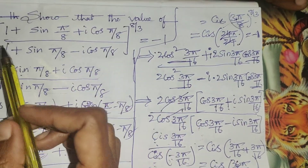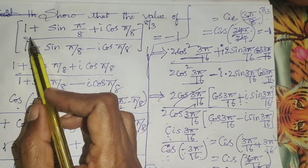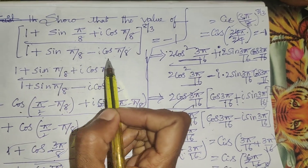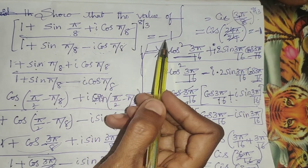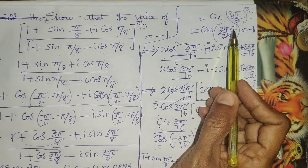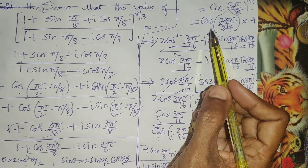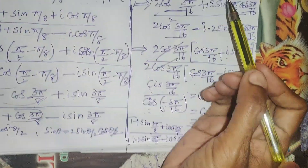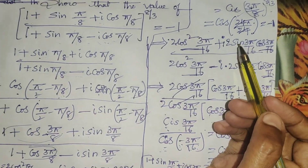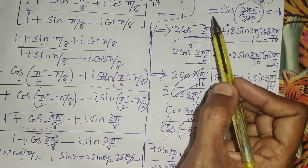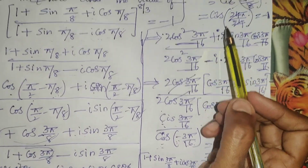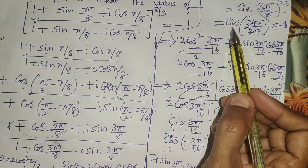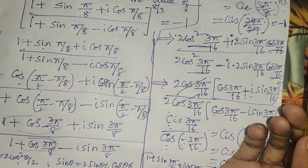Hence, the given expression (1 + sin(π/8) + i·cos(π/8)) / (1 + sin(π/8) - i·cos(π/8)) whole power 8/3 equals minus 1. This is because cis(π) = cos π + i·sin π. Since sin π = 0 and cos π = -1, the result is -1. Thank you.